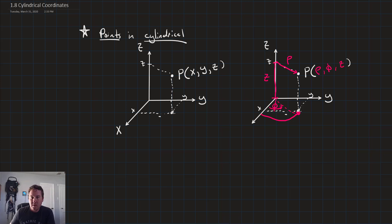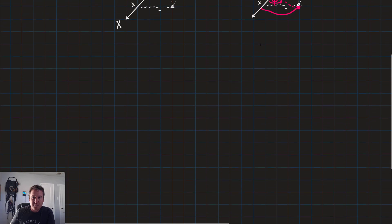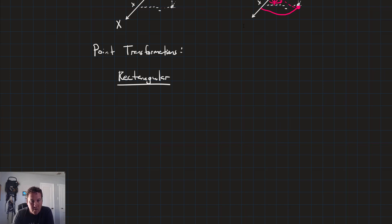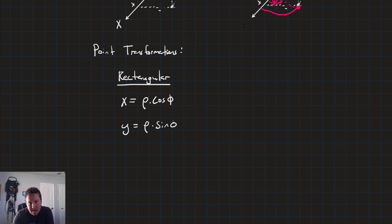Now let's talk about transformations — how do we get from XYZ to rho, theta, z? We call these our point transformations. Going from cylindrical to rectangular: x = rho·cos(theta), y = rho·sin(theta), and conveniently z is just equal to z.